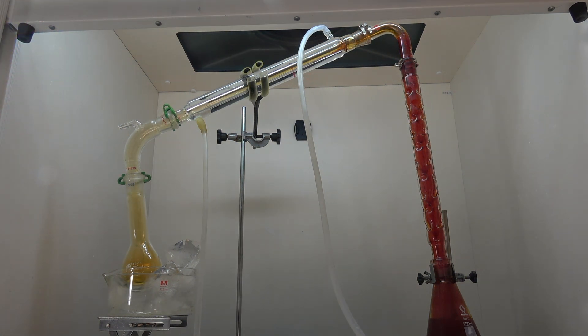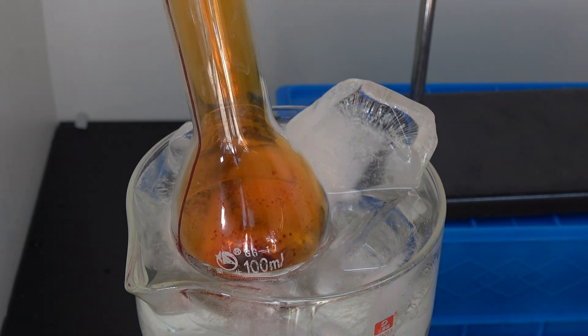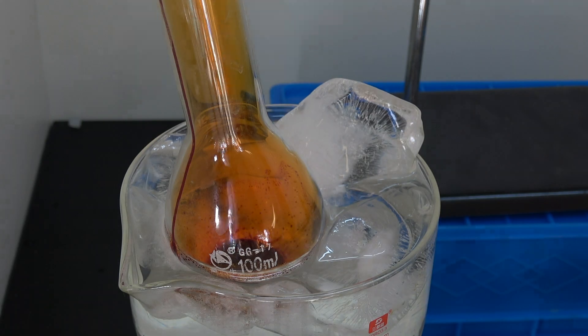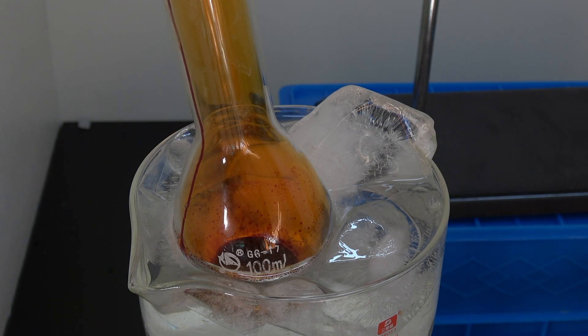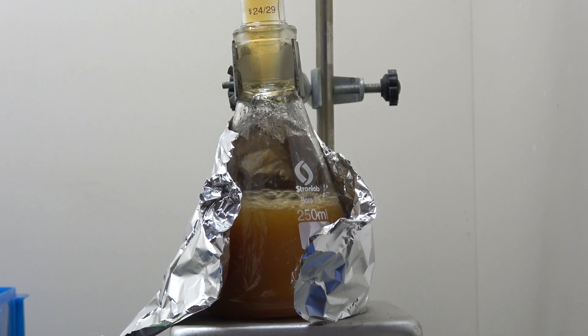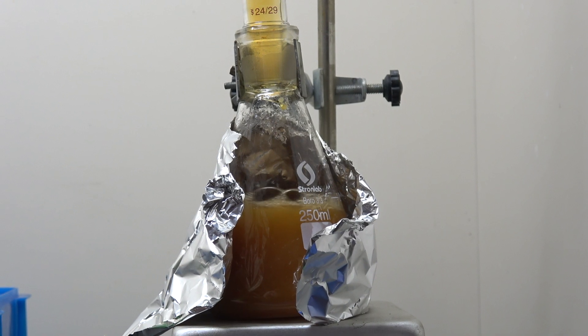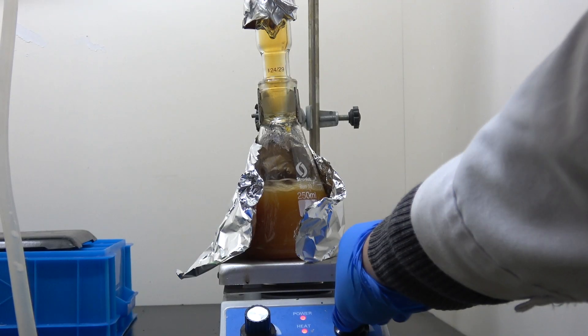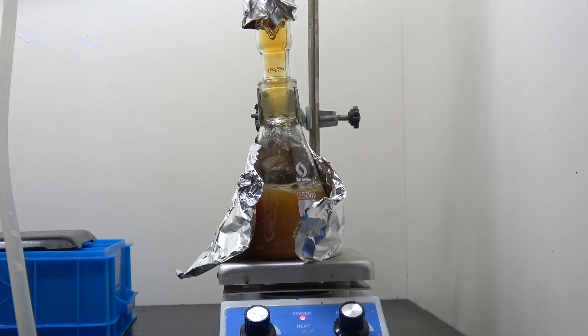It is important to turn up the heat slowly so no water makes it through the condenser. When no more bromine vapor is coming out of the distillation flask, I turn off the heat and let it cool.